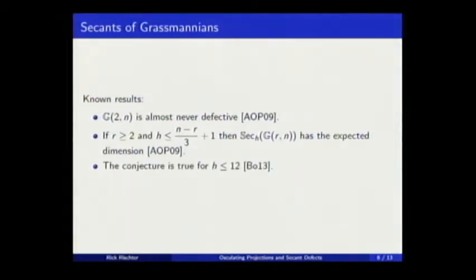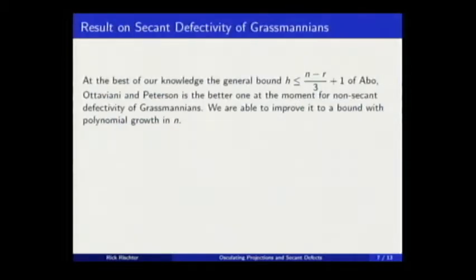Also there is a work of Ada Boralevi, which tells us that that conjecture is true up to h = 12. So this bound is linear on n. But in this work, they are able to give a bound on n², going with n². And in this way, they almost close this case, the plane case. But in the general case, this is the better bound known. What we did is give a new bound which grows polynomially with n. Then our bound is better than the one before, for R at least four.